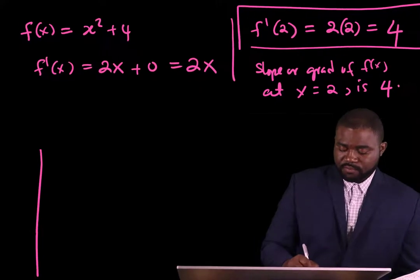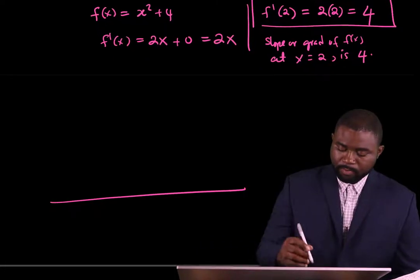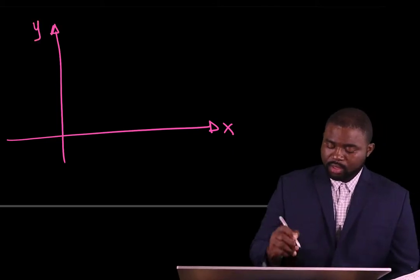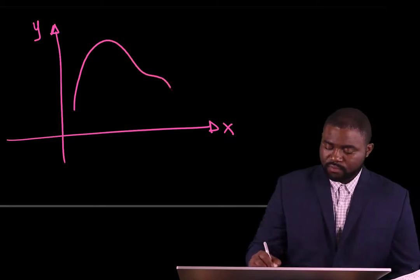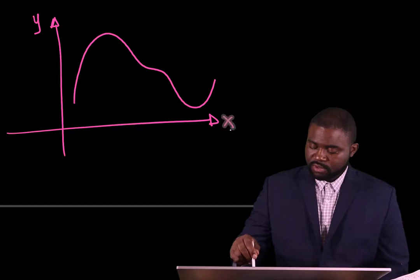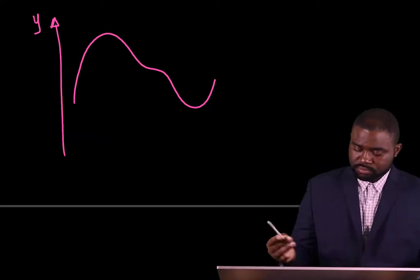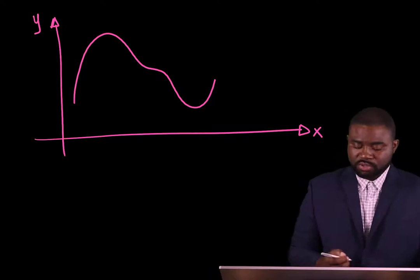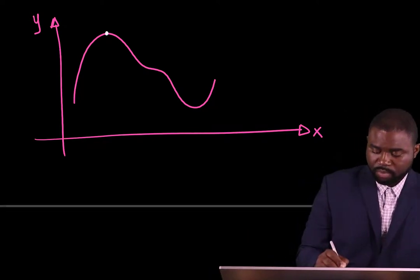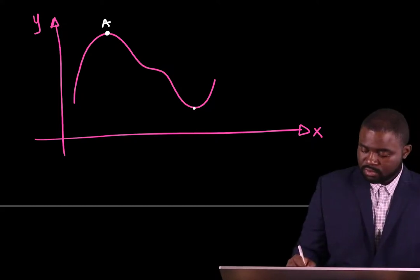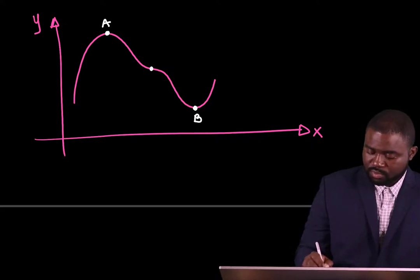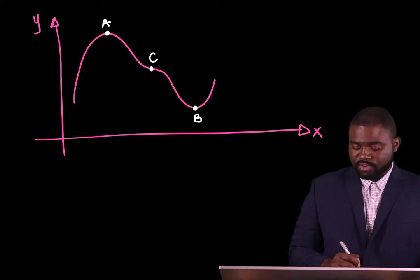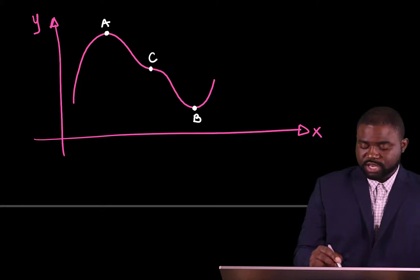If we look at a function like this — an interesting function — just by observation, you will notice a couple of interesting things. You have point A, you have point B, and you have point C. Now what do you notice? The first thing is that the slope changes at A, B, and C.